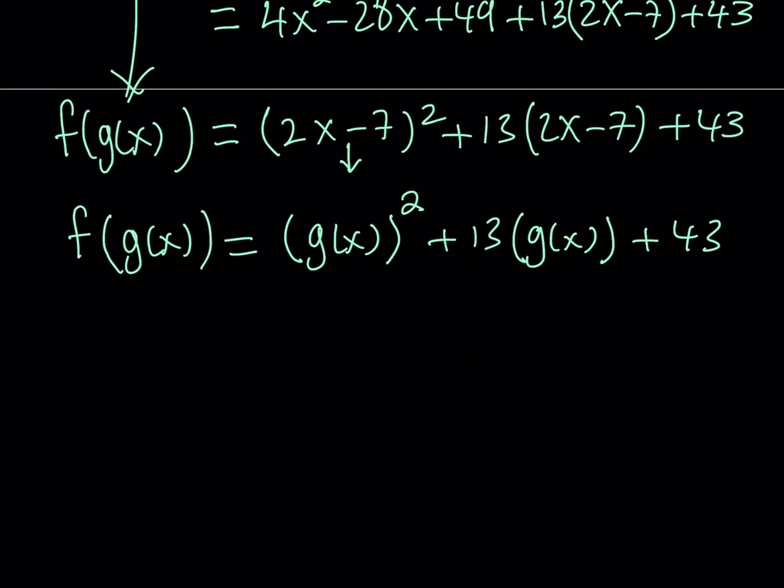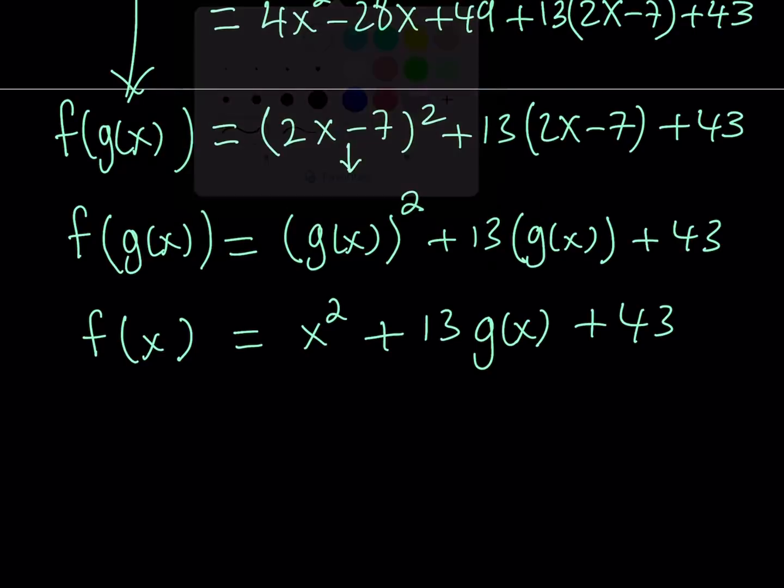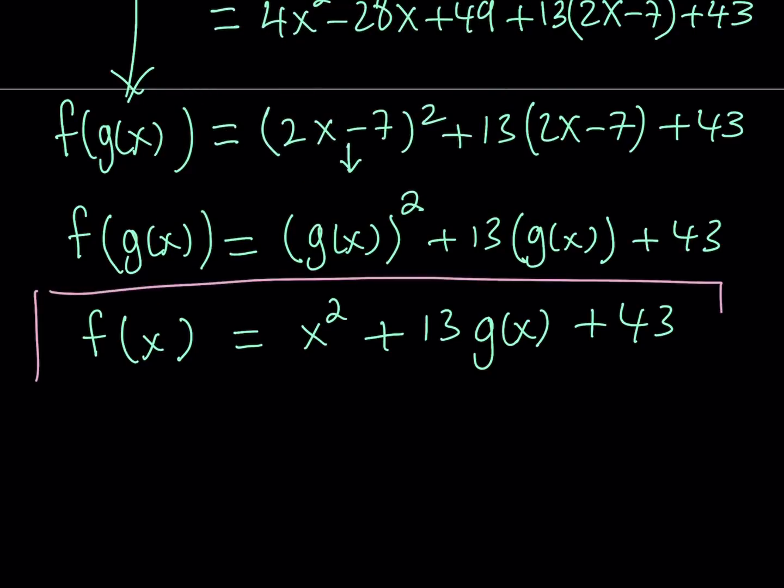A lot of times, to compose two functions, for example, f of g of x, what do you do? You replace the x in f of x with g of x. This time, we're reversing the process. We're kind of reverse engineering this composition. So, now, I'm going to replace g of x with x. And that is going to give me f of x equals x squared plus 13x plus 43. And that's what I was looking for. So, that gave us the answer for f of x. Let's go ahead and frame that. And then, talk about the second method.